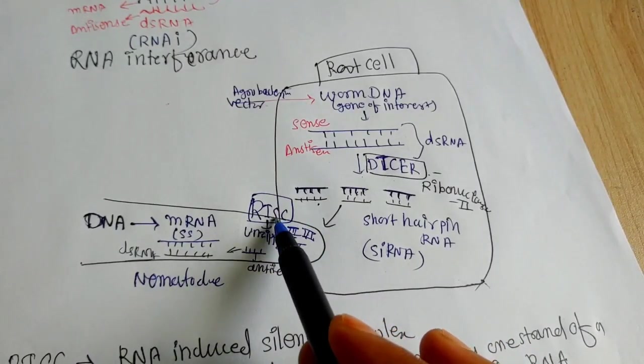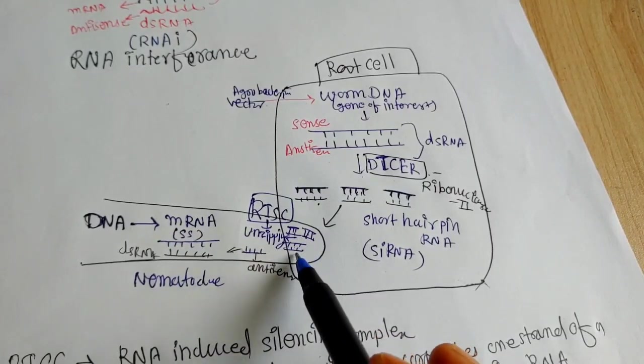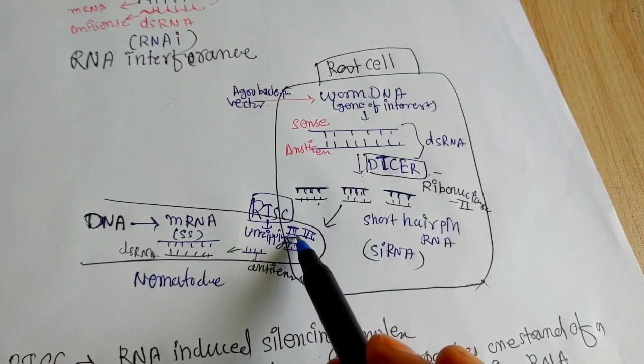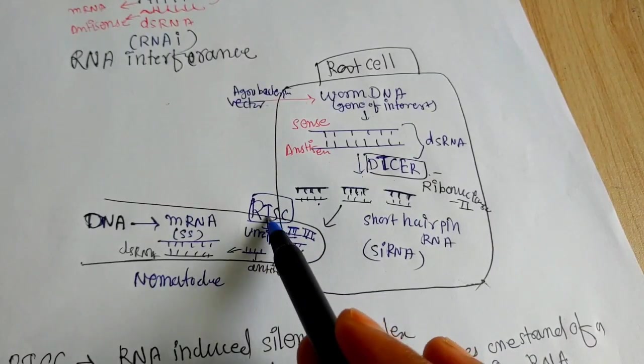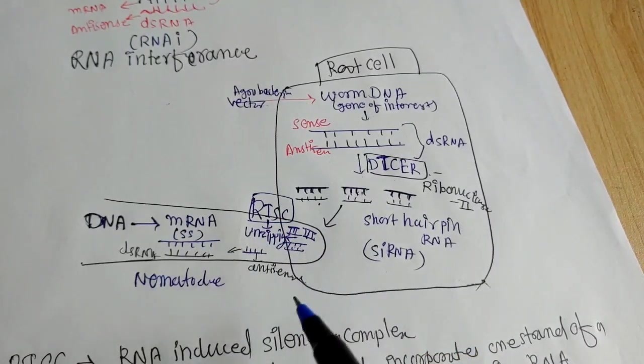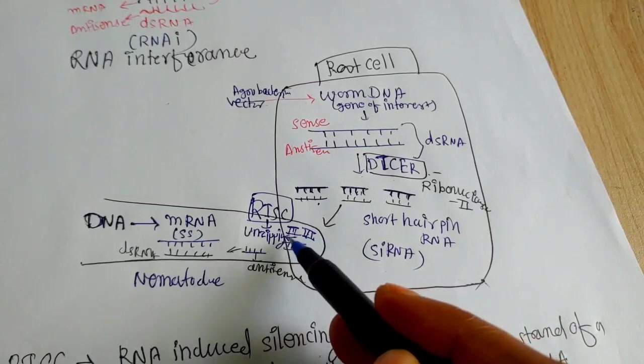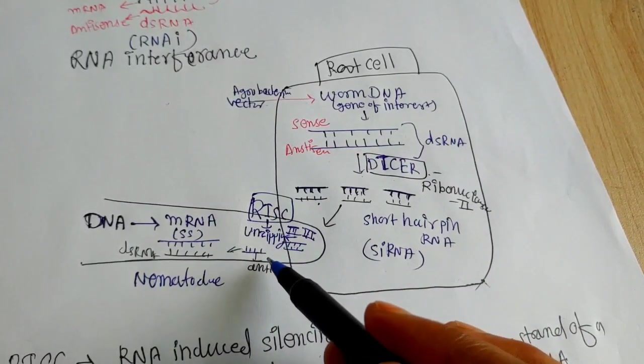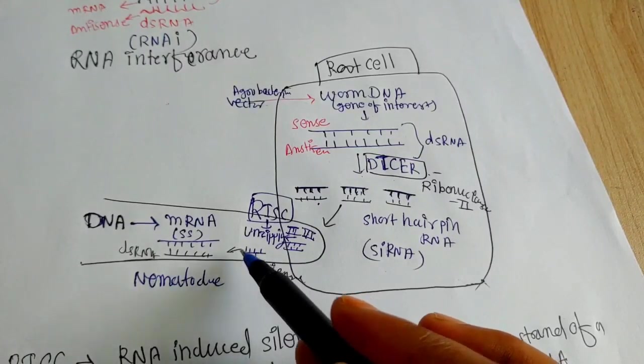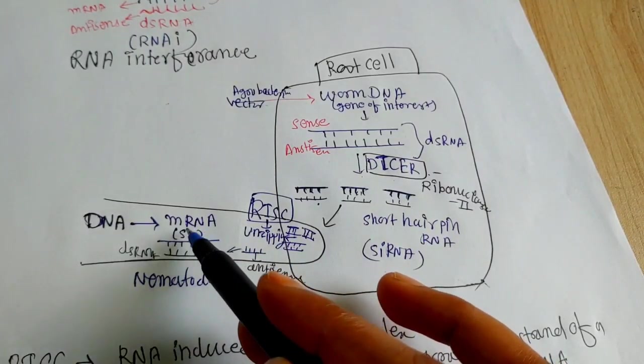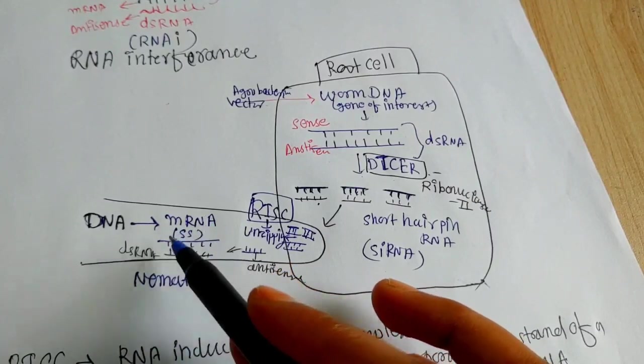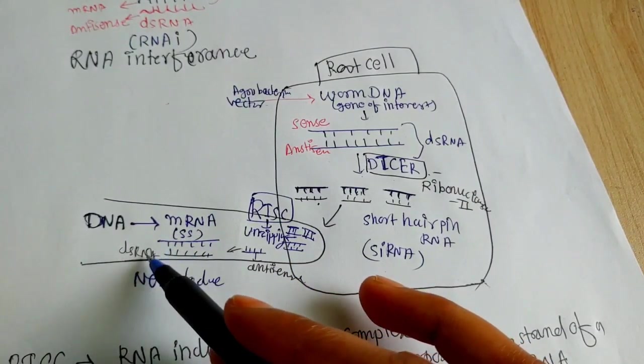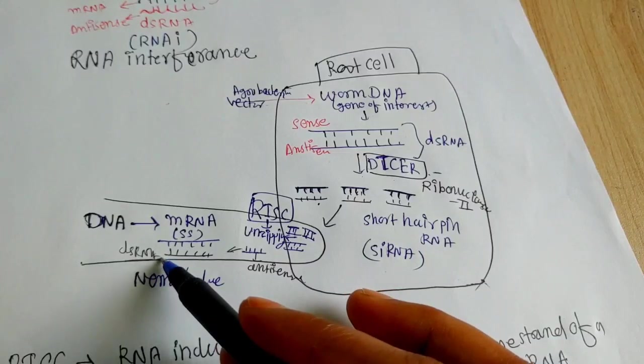So we have a factor called RISC factor that will unzip these small interfering RNA in which both sense and antisense strands are present. Now when this RISC factor will activate, the sense and antisense RNA strands are separated. And the antisense RNA strand will bind with the single-stranded mRNA of the nematode, and with this there will be formation of double-stranded RNA.